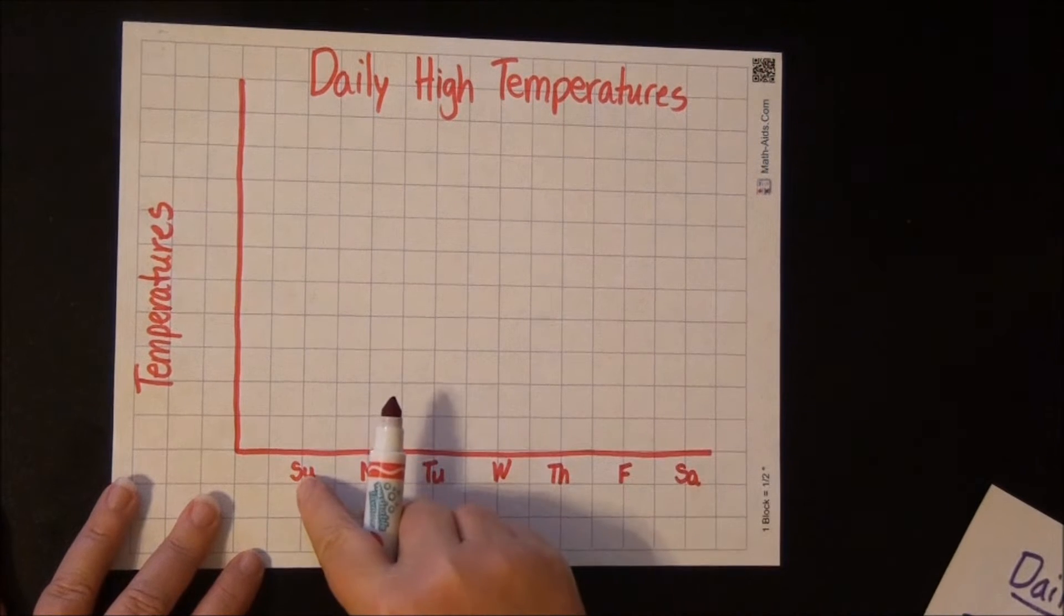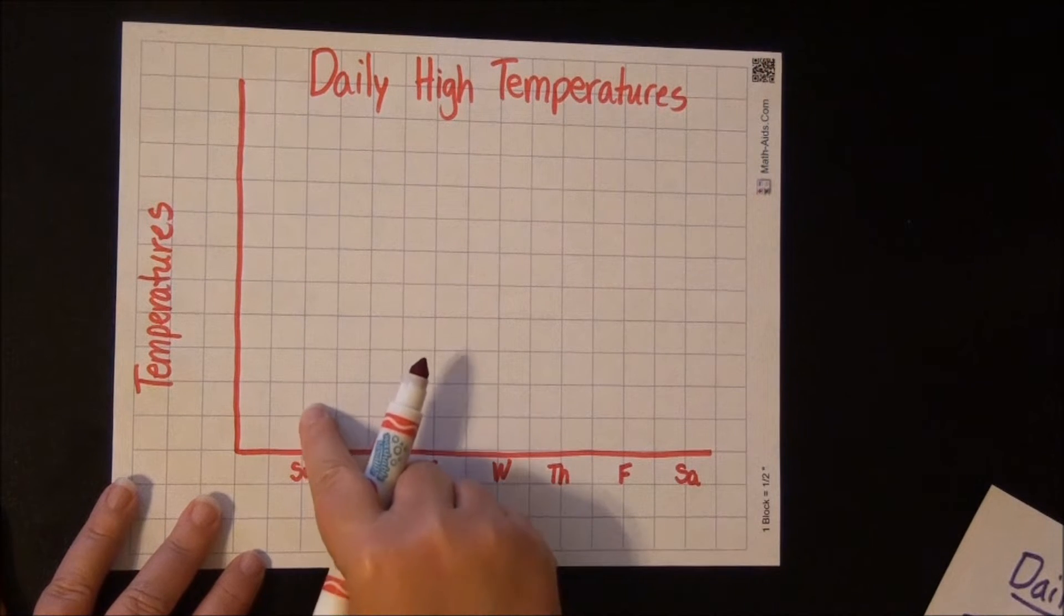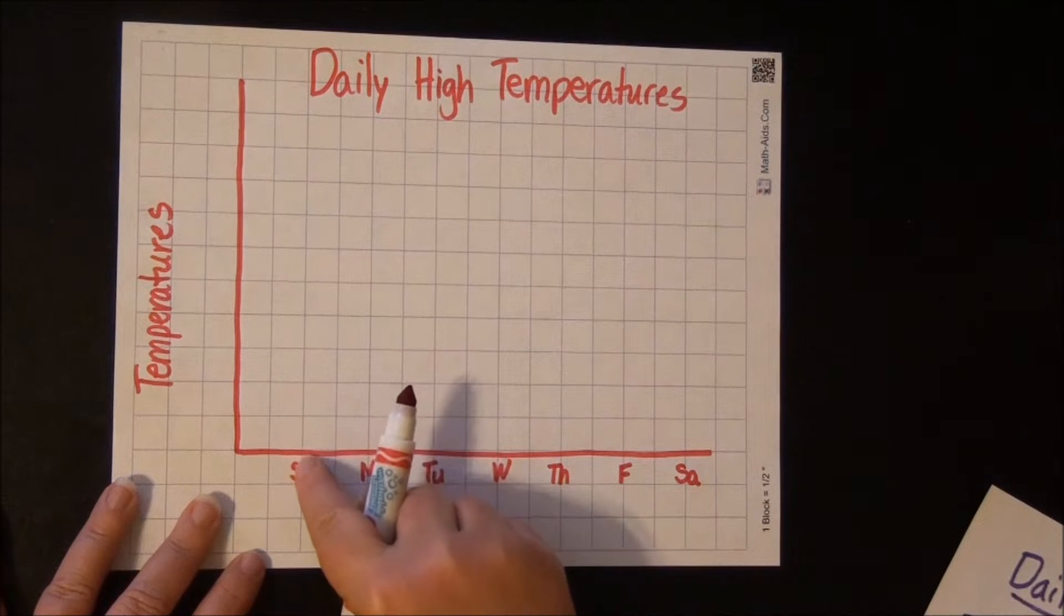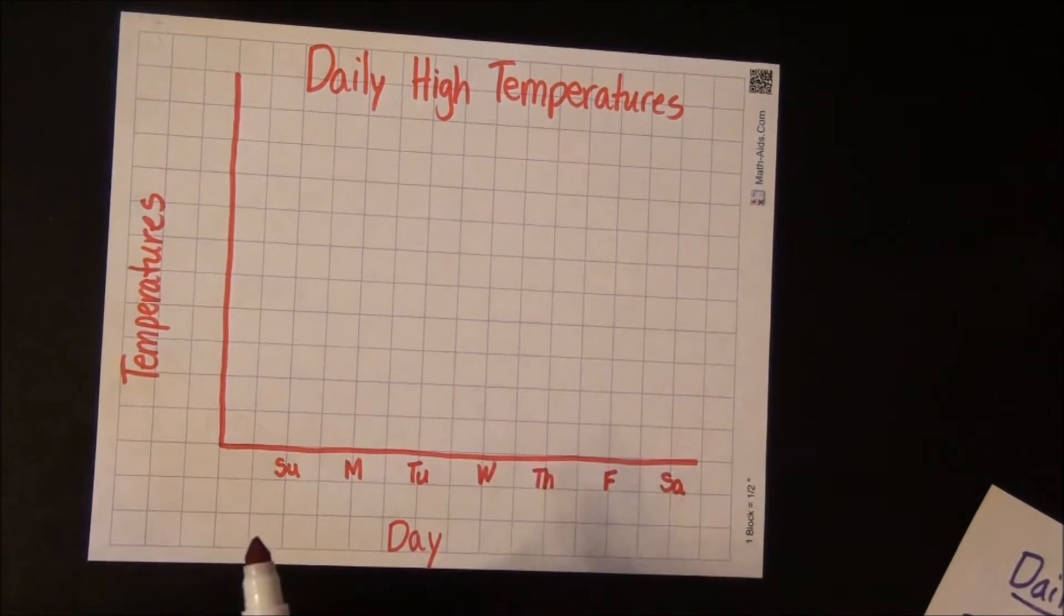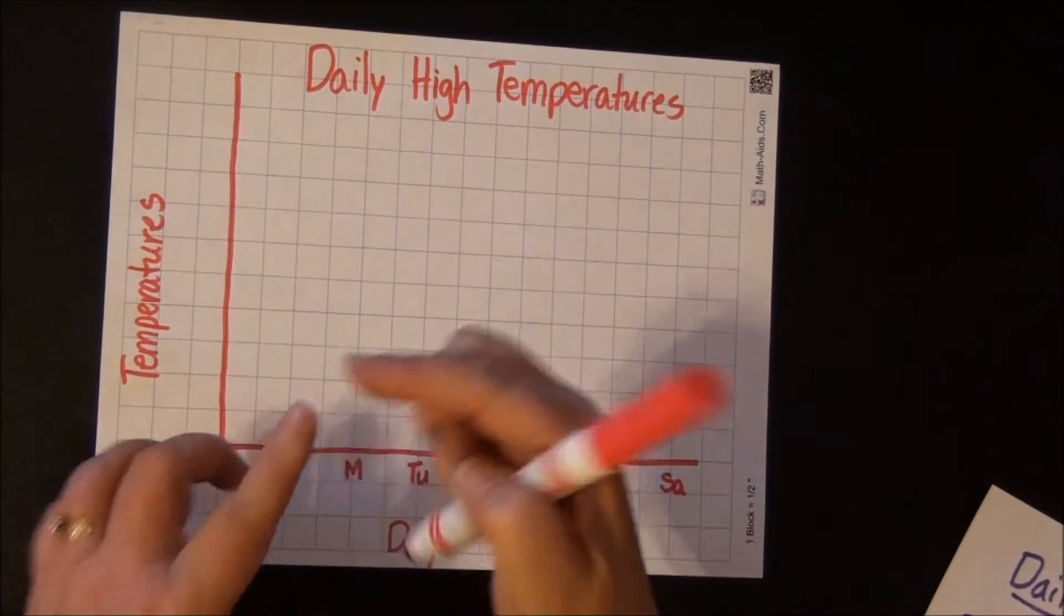Now notice I wrote these on the lines, because in a line graph you need to plot your points on the lines, where the lines intersect or where they cross over.